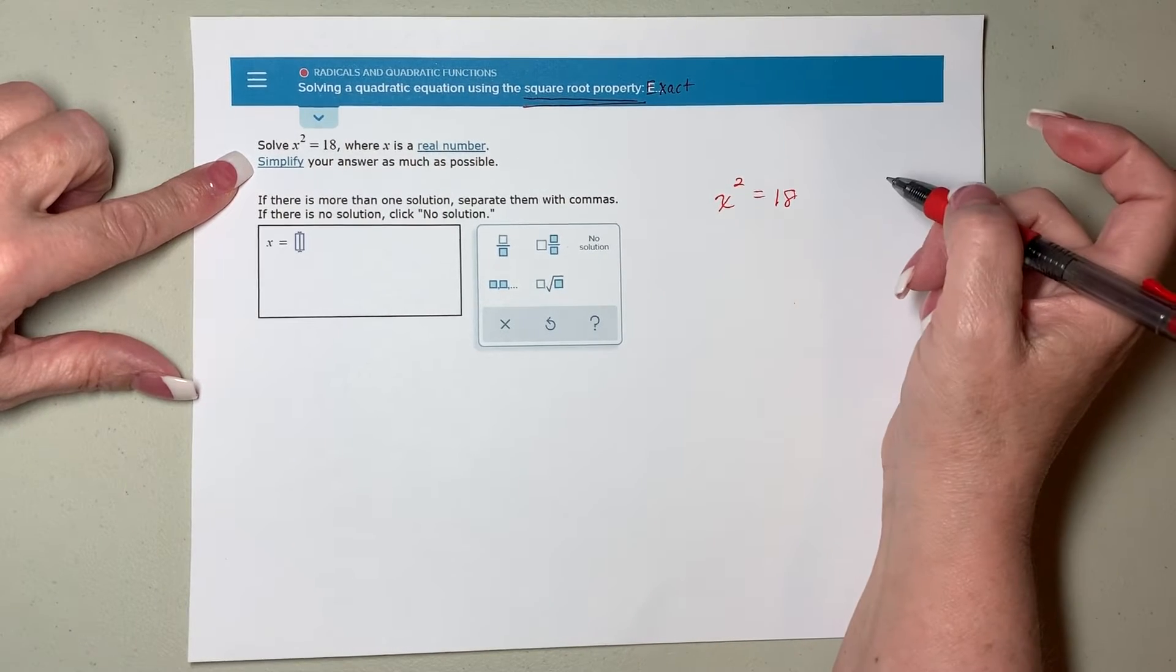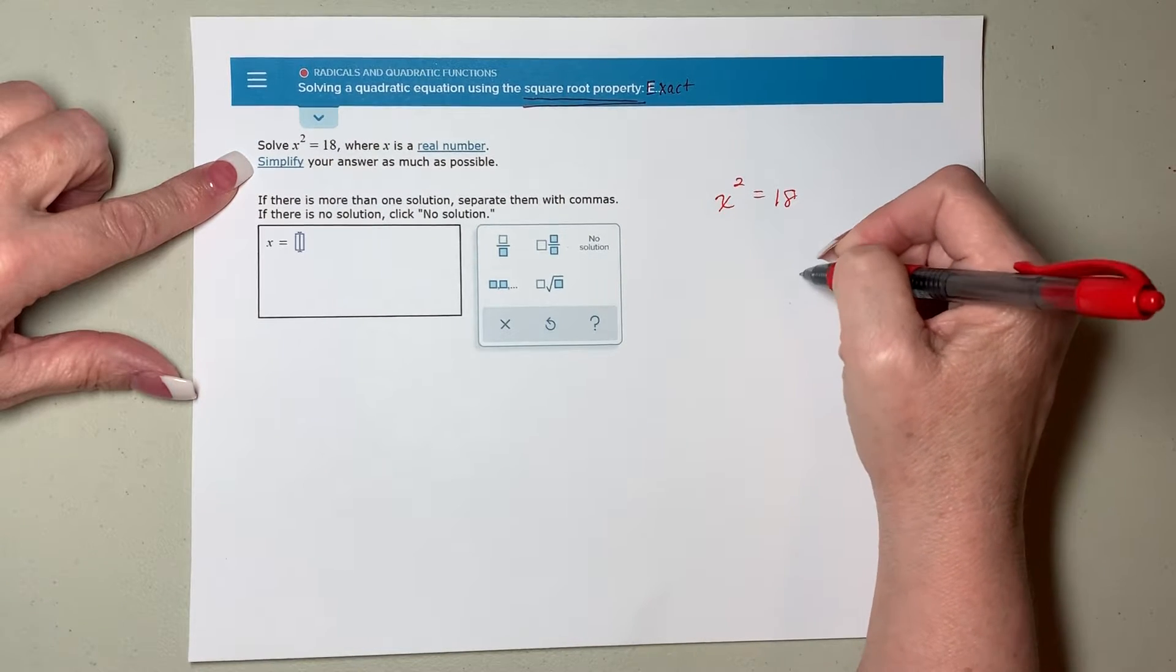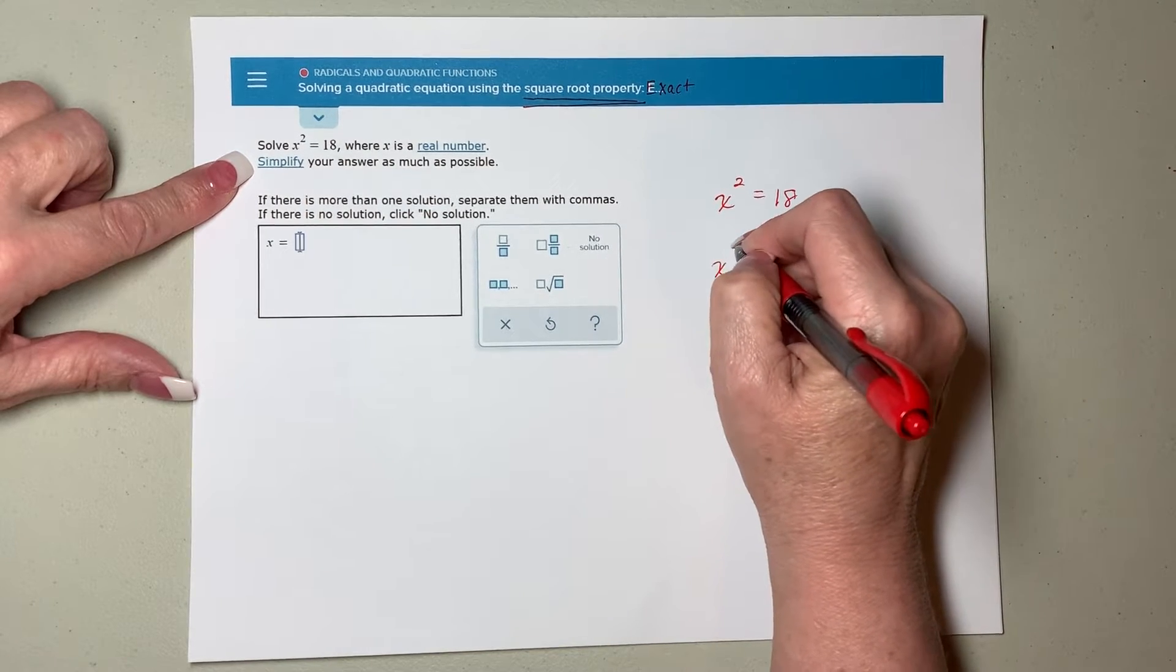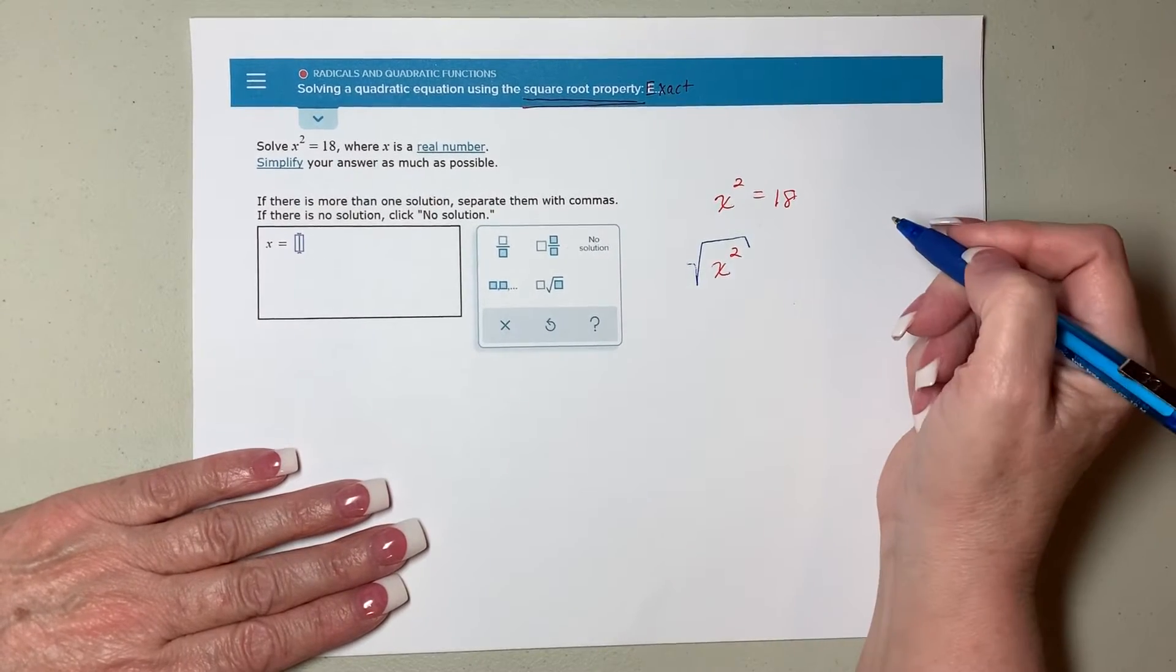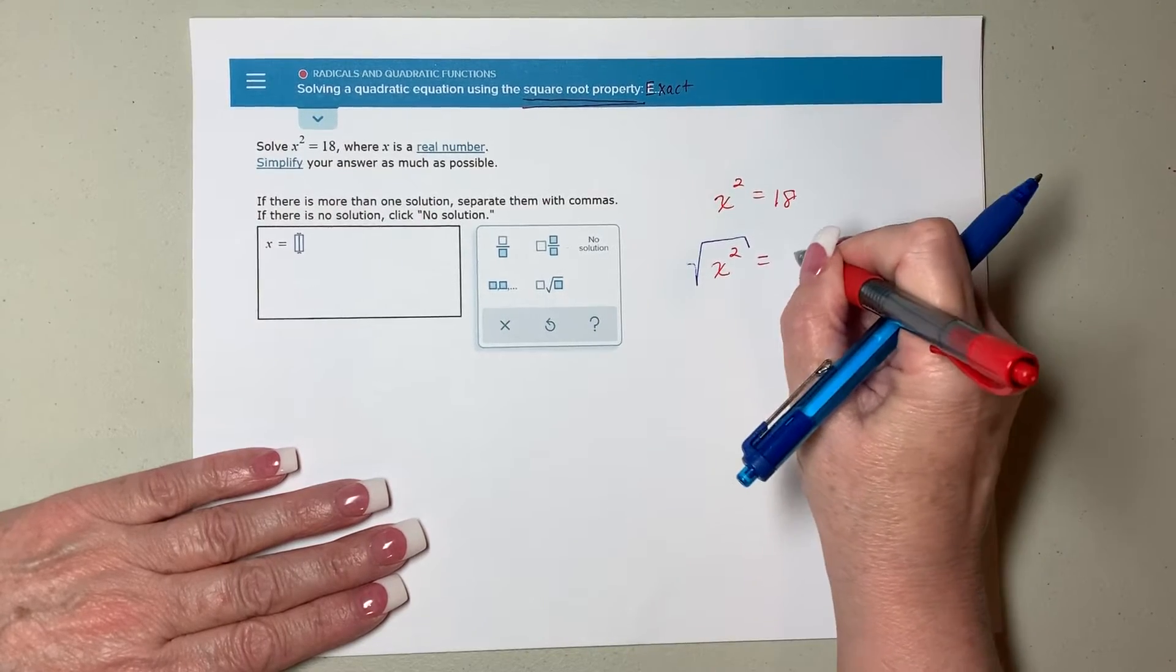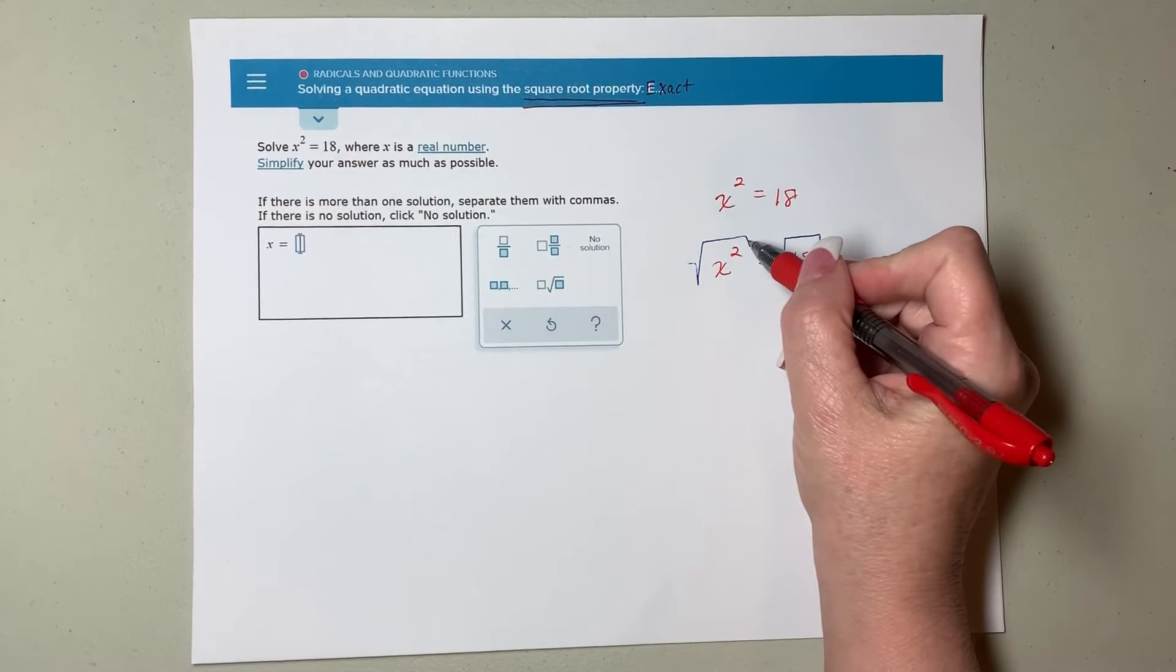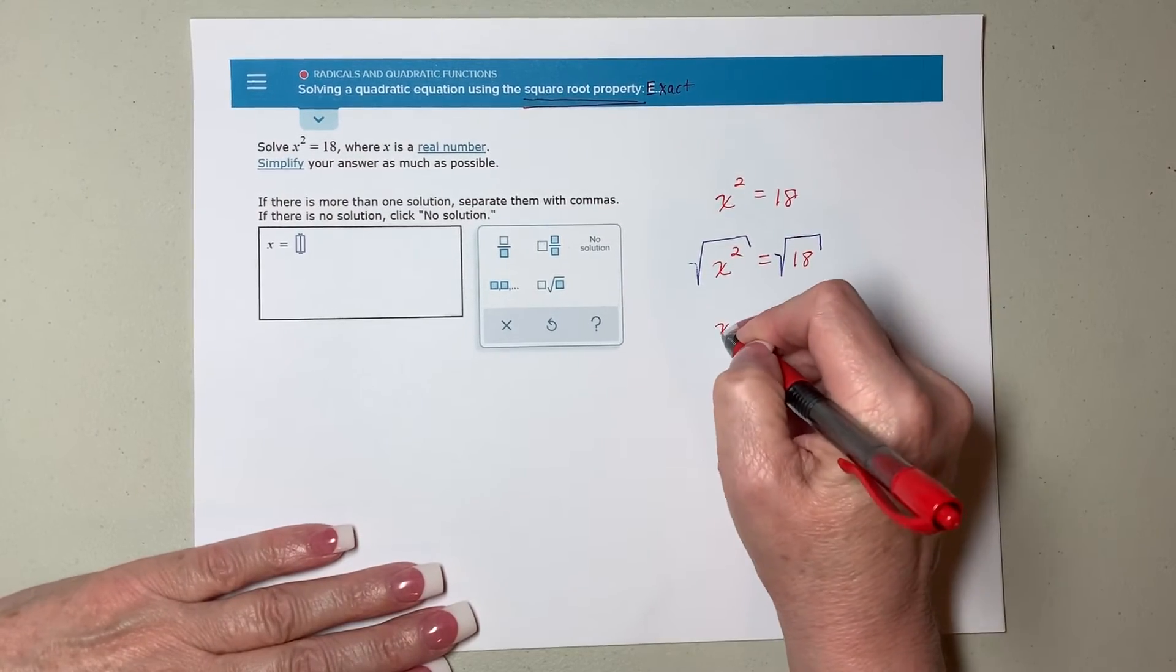You're trying to solve for x. You want it to say x equals some number. Right now it says x squared equals some number. So to get rid of the squared, I'm going to do the opposite of squaring, which is square rooting. And of course what you do to one side of an equation, you got to do to the other. When you square root a square, they cancel each other out. So boom, there's my x.